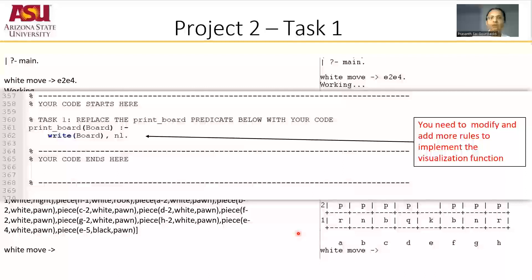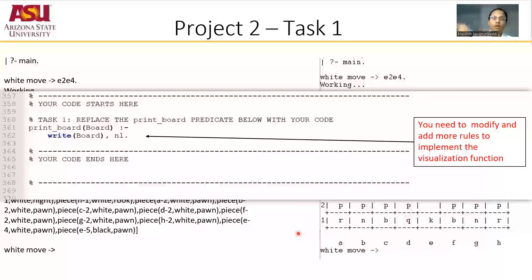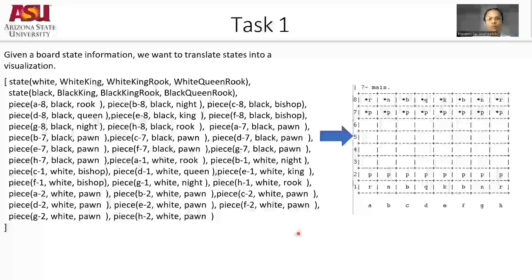It says something like: task one, replace this print_board predicate below with your code. So you remove the print_board placeholder and provide your implementation there. In my view, I would like to use a separate file to first develop my code and then bring it back here. Remember, some data like the my_member function and the initial board will be required from the main code to implement task one. So given the initial board state, my task is to translate it into a printable, readable chessboard format.